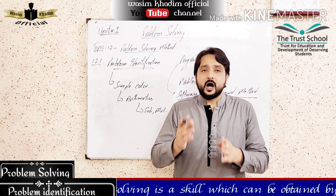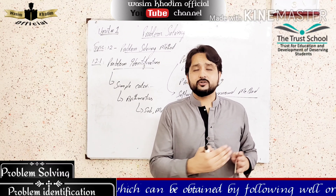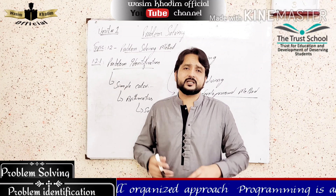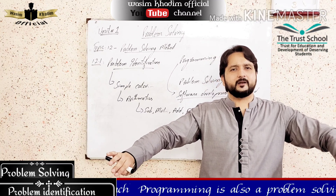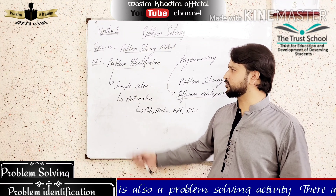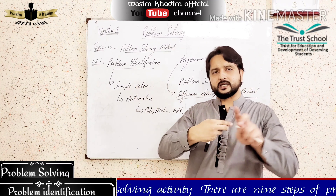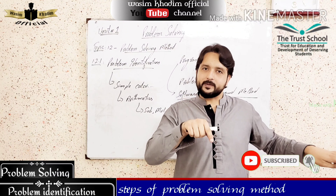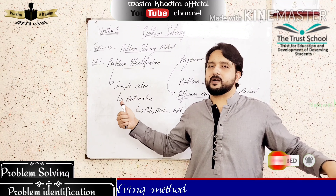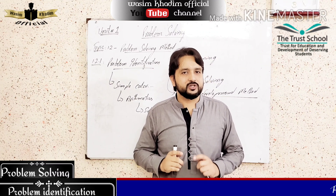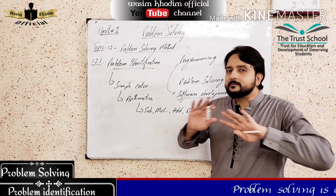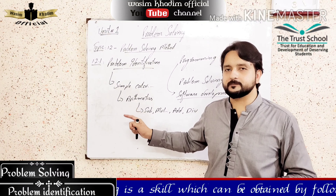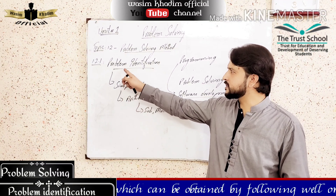Our concern is not to find sine, tangent, or other quadratic equations — that is irrelevant information. We need to focus on our problem statement, which is to make a simple calculator, not a scientific calculator. If we go beyond the problem statement, the solution will be wrong. So we have to filter out irrelevant information and focus on our problem statement. That was problem identification.